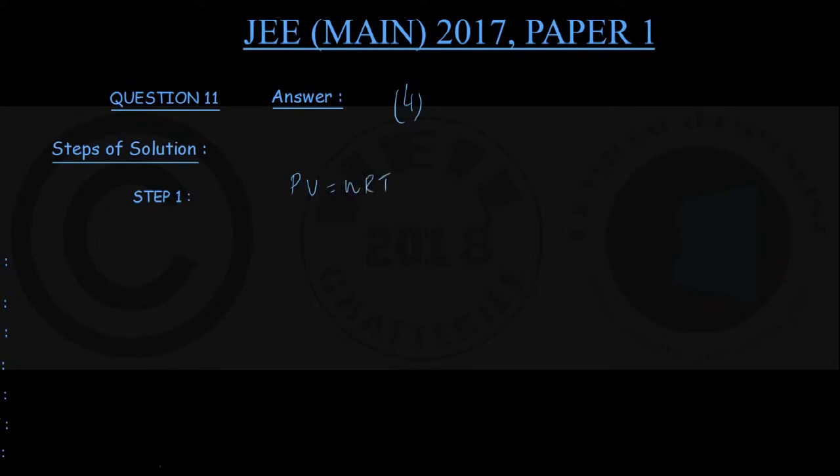Where P is the pressure, V is the volume of the gas, n is the number of moles of the gas, R is gas constant, T is the Kelvin temperature of the gas. Therefore, we are getting number of moles of a gas n is equal to PV upon RT.